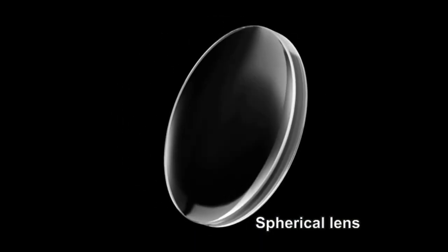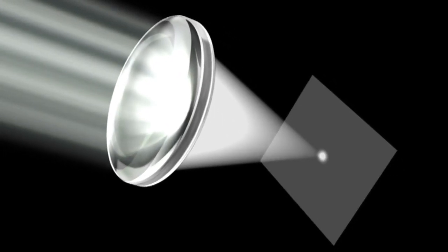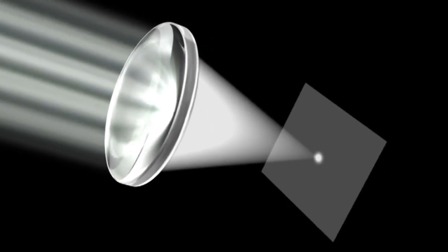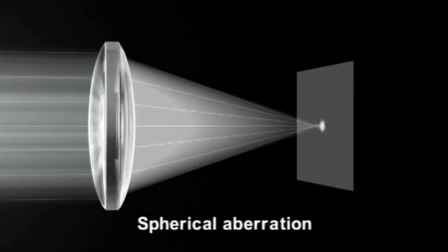With spherical lenses, however, the incoming light doesn't meet at a single point. It is spread out slightly. This is known as spherical aberration.